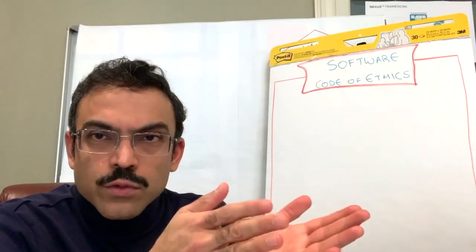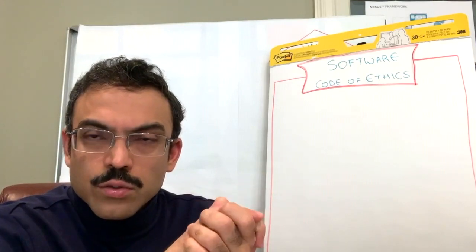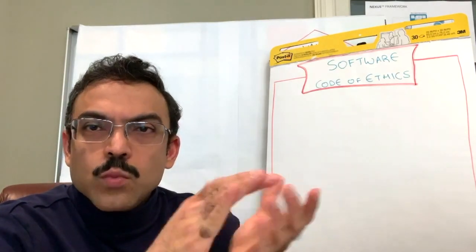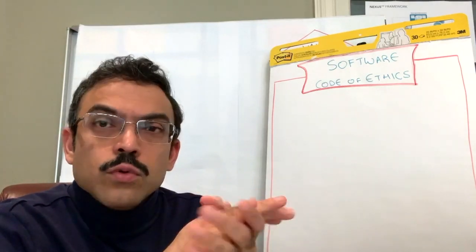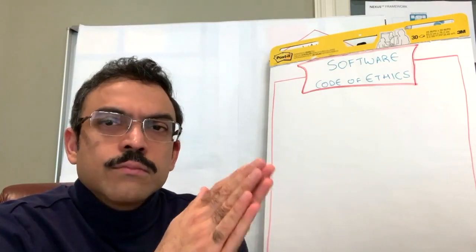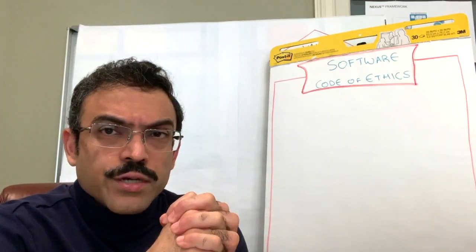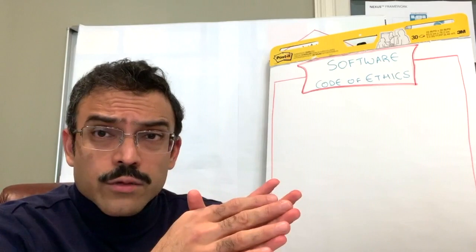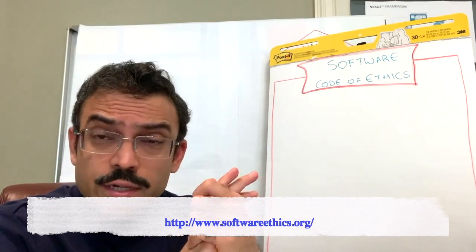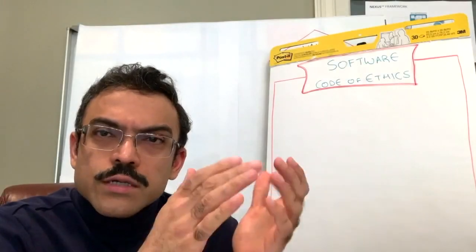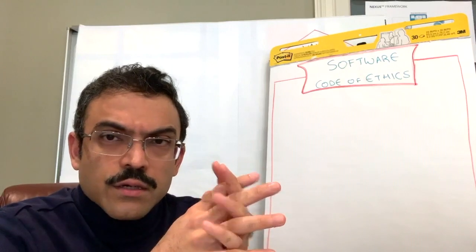Chances are some of you who are still watching might be like, 'Yeah, blah blah blah, this is all like motherhood and apple pie. In the real world, stuff like this doesn't work.' Those of you who are curious to say, 'Yeah, I get it. How do you operationalize this?' Some time ago, a bunch of scrum.org professional scrum trainers got together and we created a software code of ethics. This is available at softwareethics.org. As we started talking about how do you operationalize ethical behavior in software delivery, we started thinking about what are the typical concerns we need to manage.